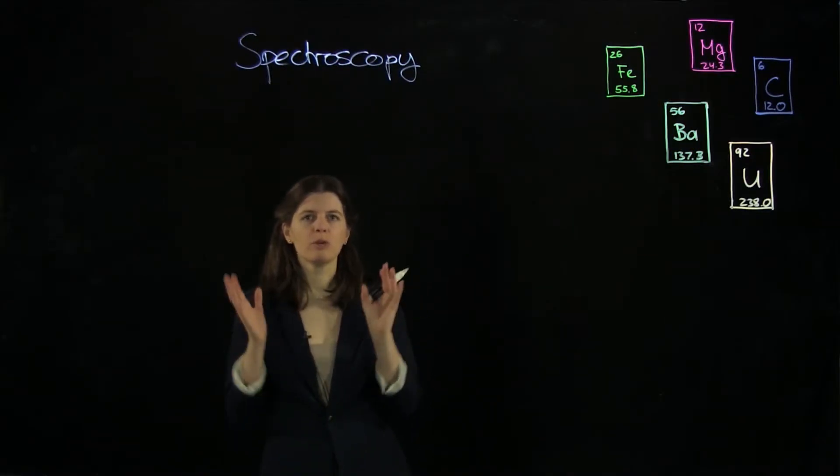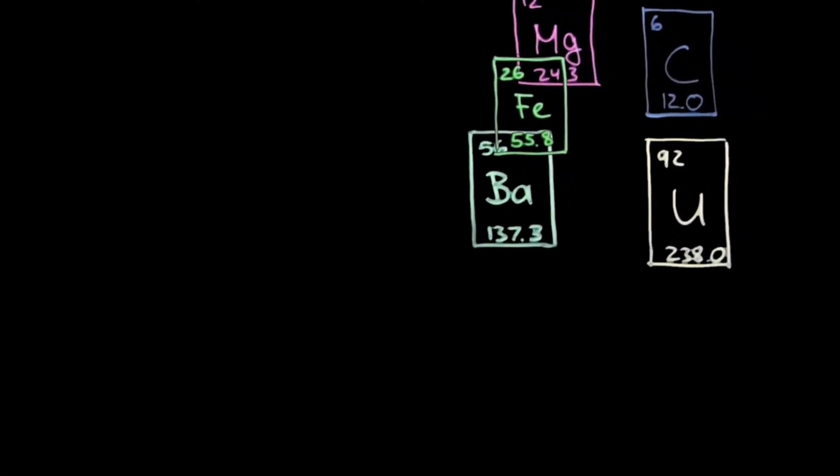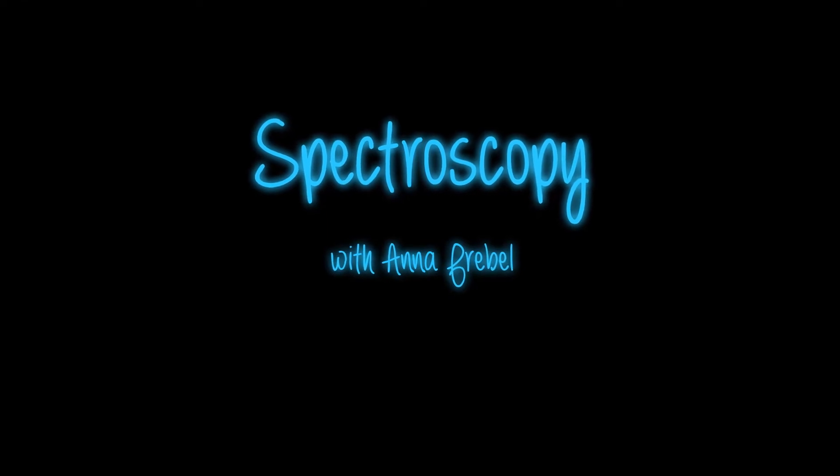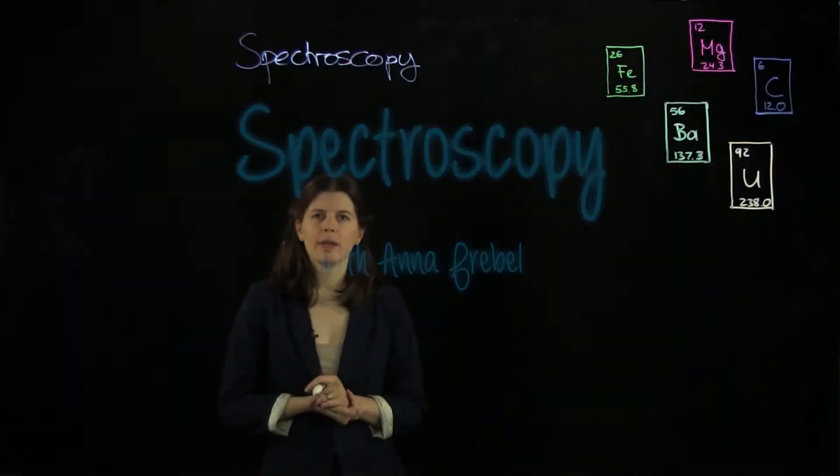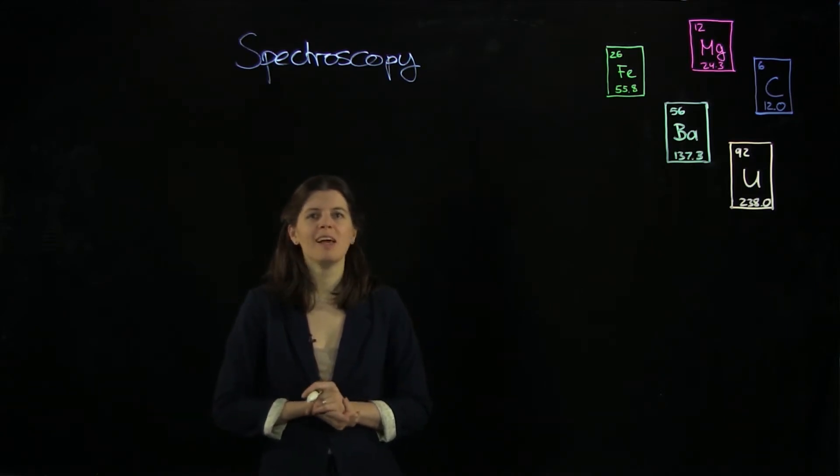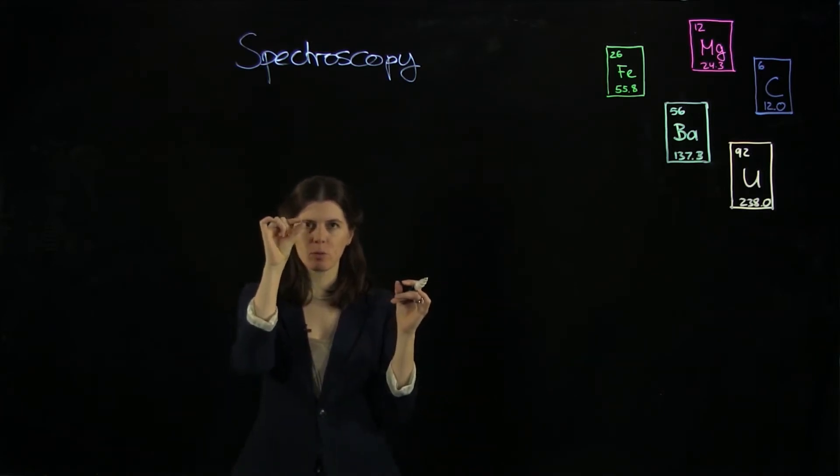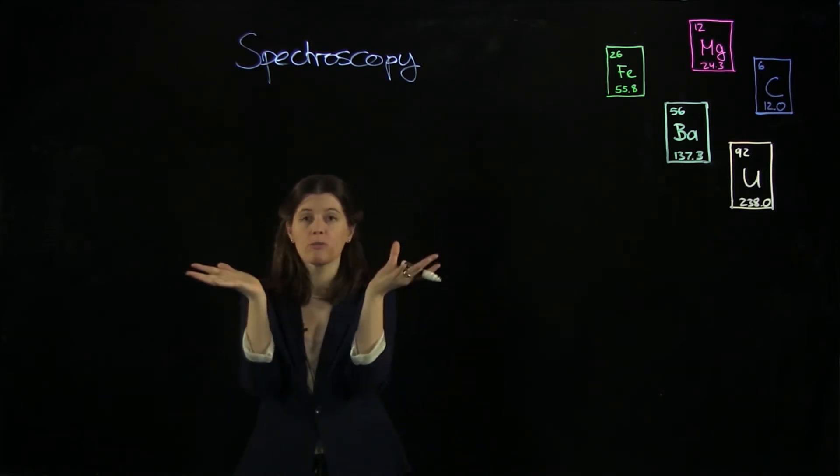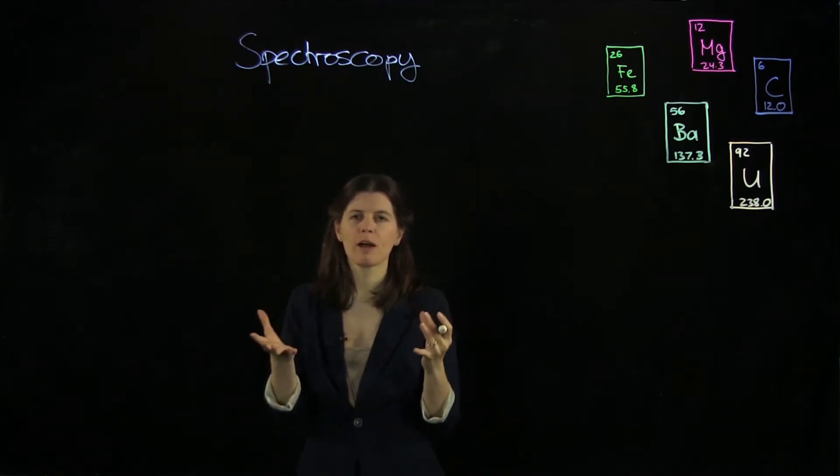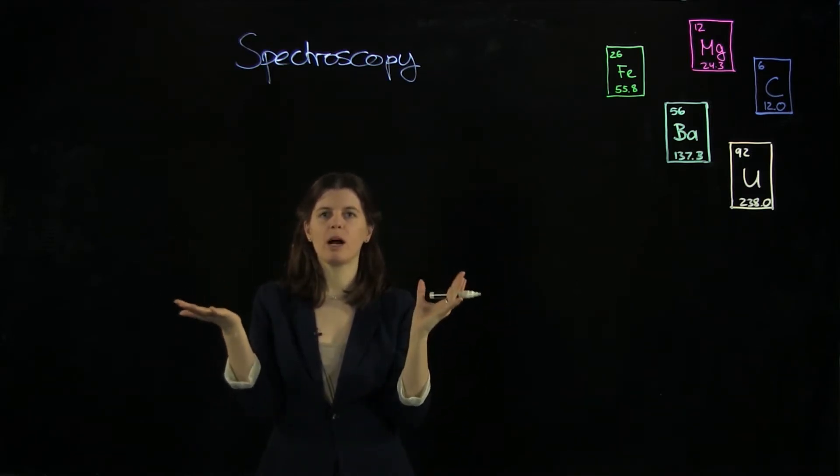This is the technique we use to observe stars in order to figure out their chemical composition. Now you've probably all seen a rainbow. I really hope you have. And what happens in a rainbow? Well, white light comes through a little water droplet and it gets split up into the rainbow colors. And we do the same thing with a spectrograph mounted at a telescope. We take the starlight and we split it up into its rainbow colors.